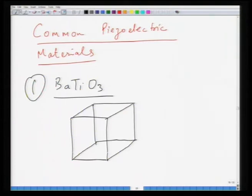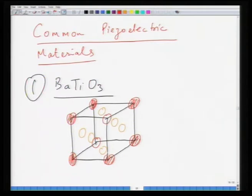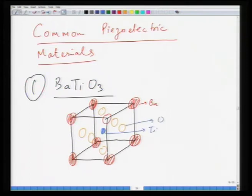Barium titanate is a very useful material — it is easy to make. The oxygen atoms sit at the face centers, barium atoms are at the corners of the unit cell, and the smaller titanium atom sits at the center of the unit cell.